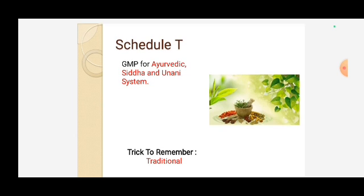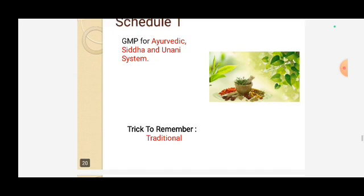Schedule T — the trick is 'T for Traditional.' Traditional medicine refers to Ayurvedic, Siddha, and Unani systems. Schedule T is for GMP (Good Manufacturing Practices) for Ayurvedic, Siddha, and Unani systems.